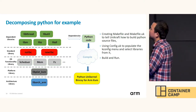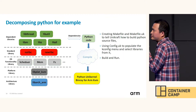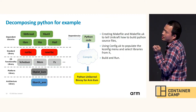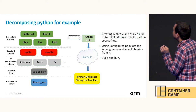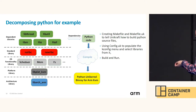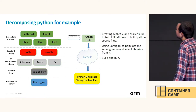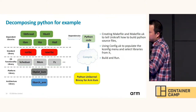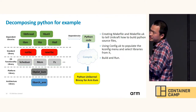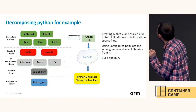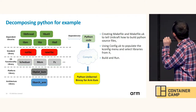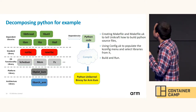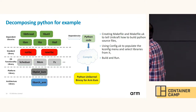For example, we want to select different schedulers or different types of file systems. Then we can save, exit, and type make to generate UniKraft Python binaries that can run on ARM KVM.